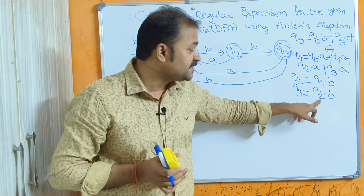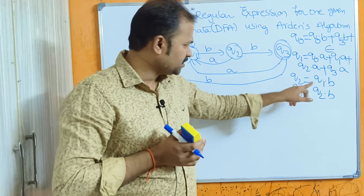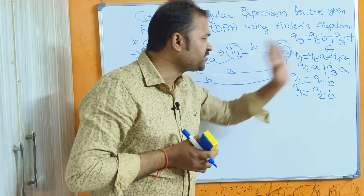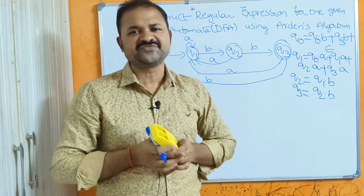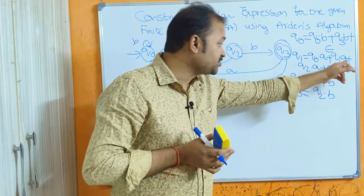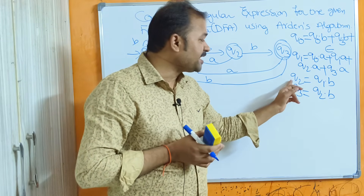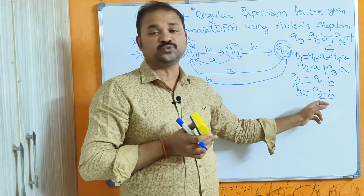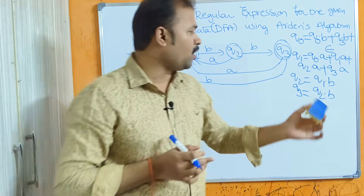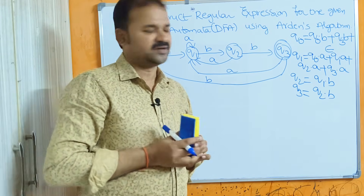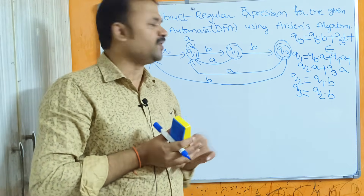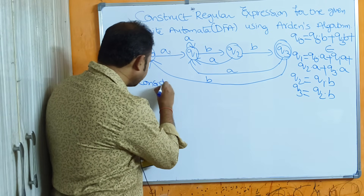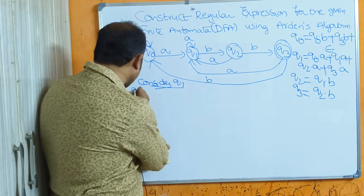q3 = q2·b, so q3 depends on q2. And q2 = q1·b, so q2 depends on q1. We can represent q2 and q3 in the form of q1. So we must first simplify q1. q3 depends on q2, q2 depends on q1, so we start by considering the state q1.